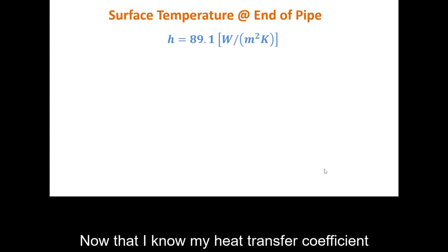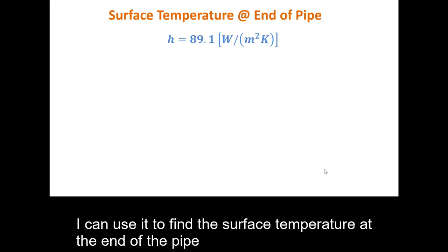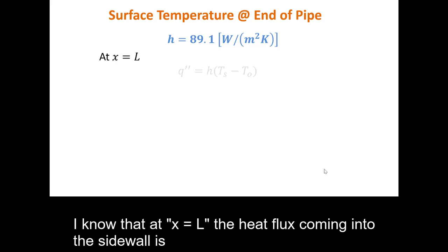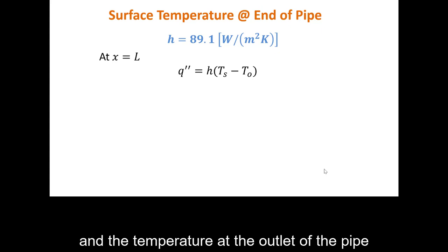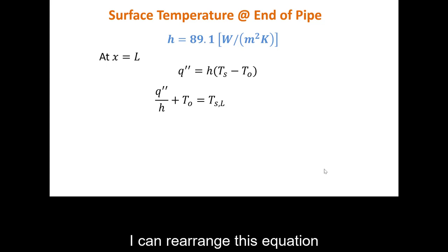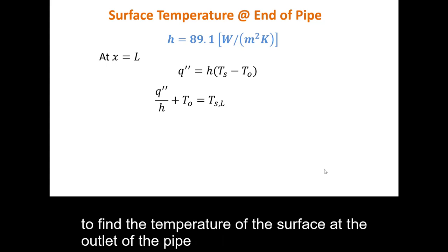Now that I know the heat transfer coefficient, I can work toward finding the surface temperature at the end of the pipe. At x = L, the heat flux through the sidewall equals the heat transfer coefficient multiplied by the difference between the local surface temperature and the outlet fluid temperature. Rearranging gives an expression for the pipe surface temperature at the outlet — but I don't yet know the heat flux.